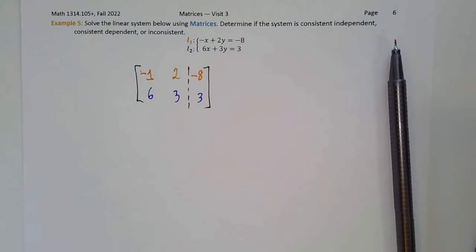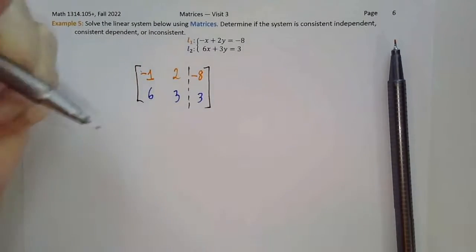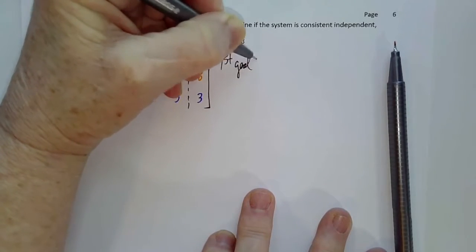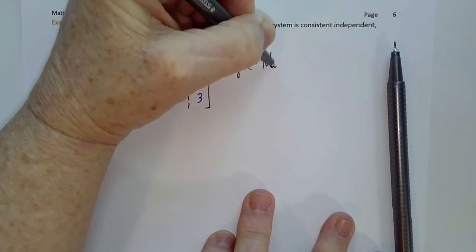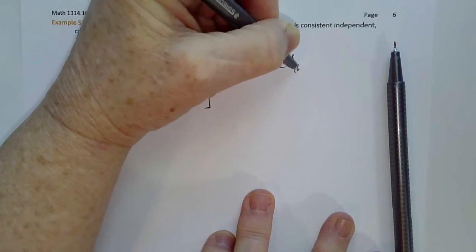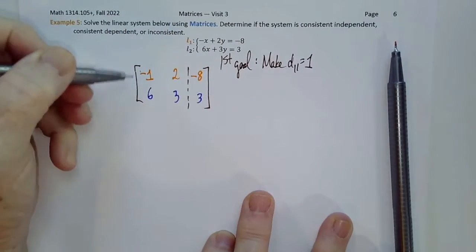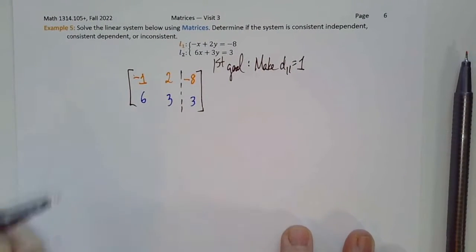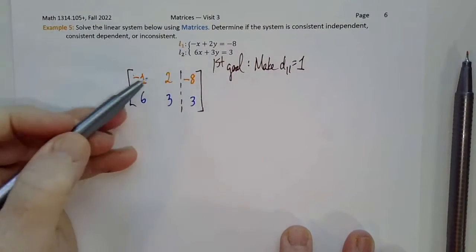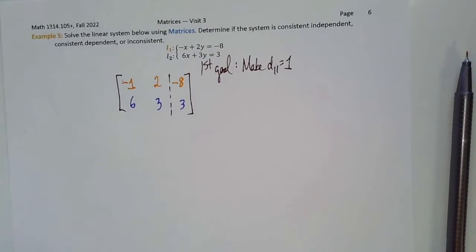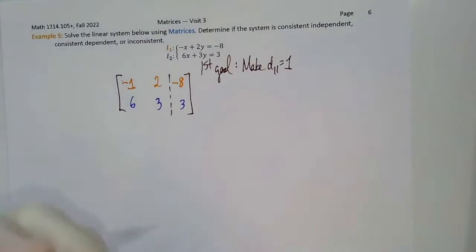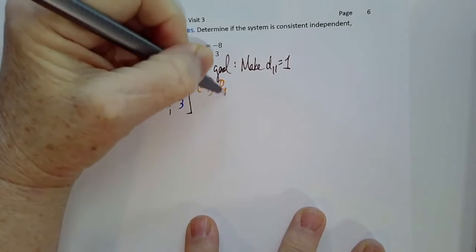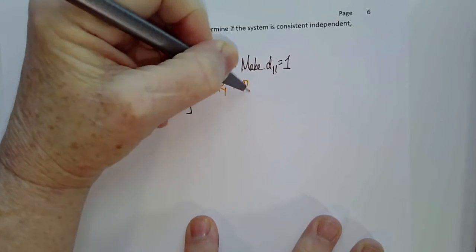Our first goal is to make d11 equal to 1. d11 is the first position in the first row. Well, it's kind of nice this time. All we have to do is multiply row 1 by negative 1 to make negative 1 positive. So negative 1 times r1 will give us a new r1.